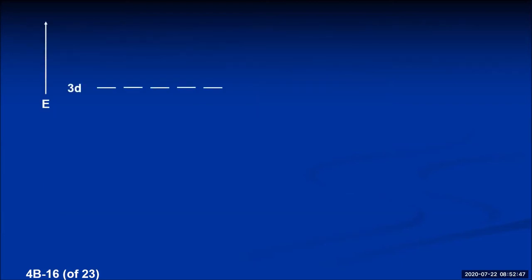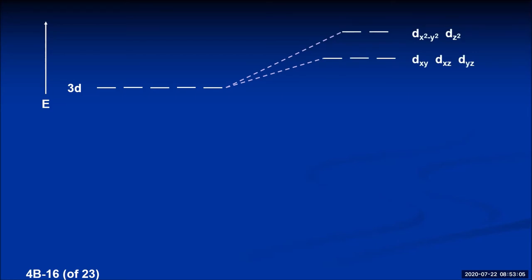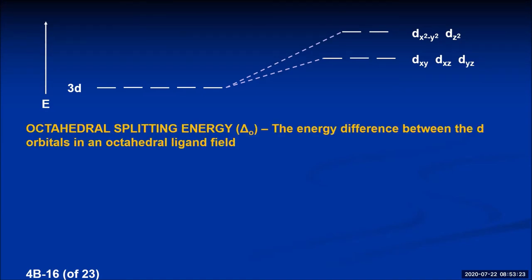If a metal atom has no ligands, all five d orbitals are the same energy — degenerate. In an octahedral crystal field, the energies all go up because the ligands repel them, but they split into two groups. The dxy, dxz, and dyz are lower in energy, while the dx²-y² and dz² are the most unstable — highest in energy. The difference in energy between the two sets of d orbitals is called the octahedral splitting energy, delta sub O. This energy difference is determined by both the metal ion charge and what the ligands are.